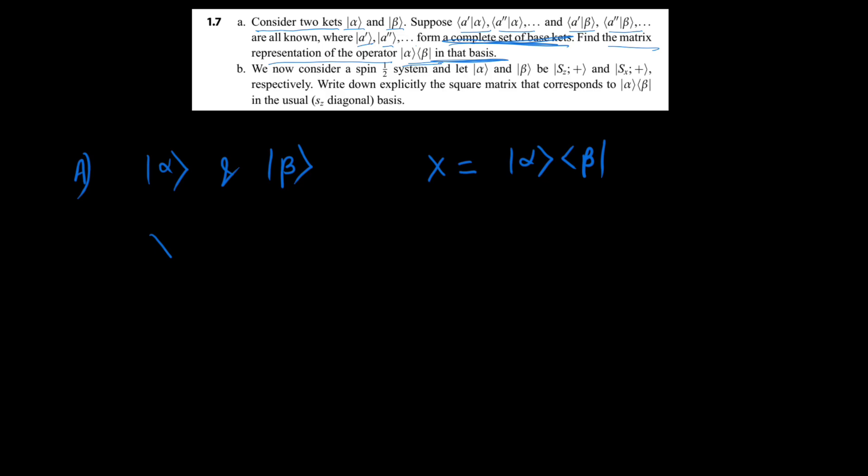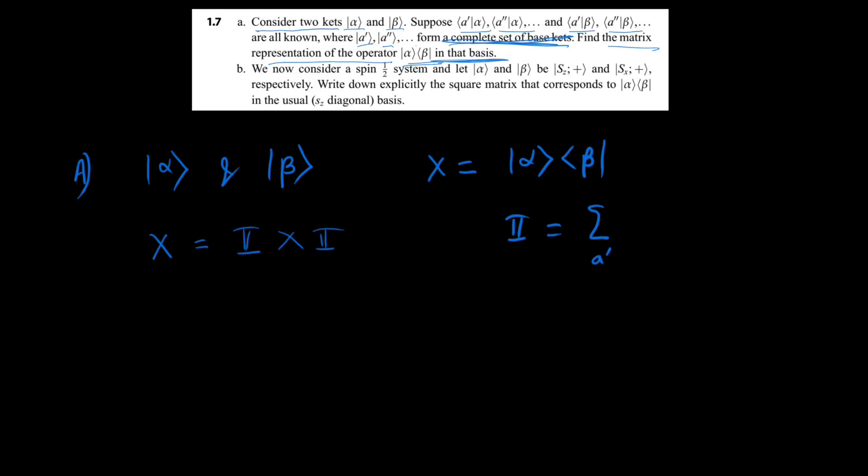So you know that the x operator can be written as identity operator times x times identity operator. And now identity operator can be represented in this form. So we have some basis a prime and we have a prime ket a prime. So we can write x as a prime and a double prime. So we take two indices here. So we have a prime, a prime, x, a double prime, a double prime. So this quantity right here represents the matrix elements of x.